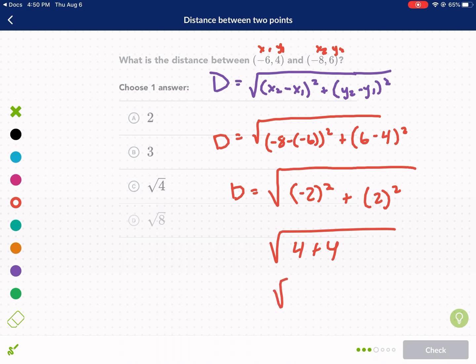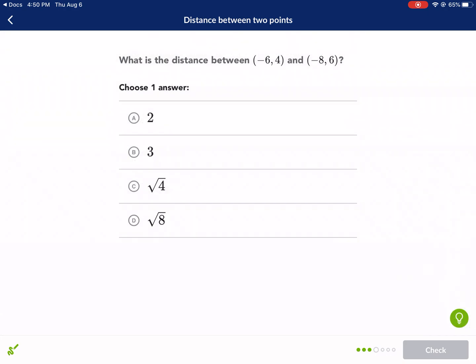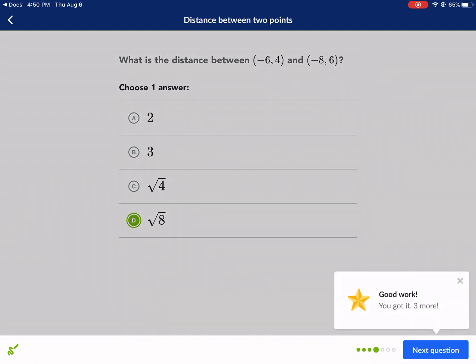So we're going to have 4 and 4, 4 plus 4. That's the square root of 8 equals the distance. And we should plug that in for our last answer. There we go.